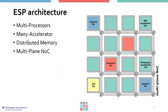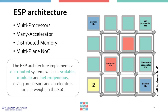The ESP architecture is structured as a tile grid. For a given application domain, the architect decides the structure of the SOC by determining the number and mix of tiles. For example, the figure shows 16 tiles organized in a 4x4 matrix. There are four types of tiles: processor tiles, accelerator tiles, memory tiles for communication with main memory, and an auxiliary tile for peripherals like UART or Ethernet, or for system utilities like the interrupt controller. Each tile is encapsulated into a modular socket that interfaces it to a network-on-chip with a packet-switched 2D mesh topology with multiple physical planes. The ESP architecture implements a distributed system, which is inherently scalable, modular and heterogeneous.